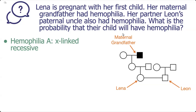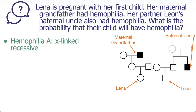On Leon's side, these are Leon's parents, and it says Leon's paternal uncle — that means the uncle on his dad's side, so that's his dad's brother. The black square means that person shows the trait of hemophilia A. We also draw Leon's grandparents on his dad's side. Lena is pregnant and we show the baby; since we do not know the sex of the baby, we draw a diamond.